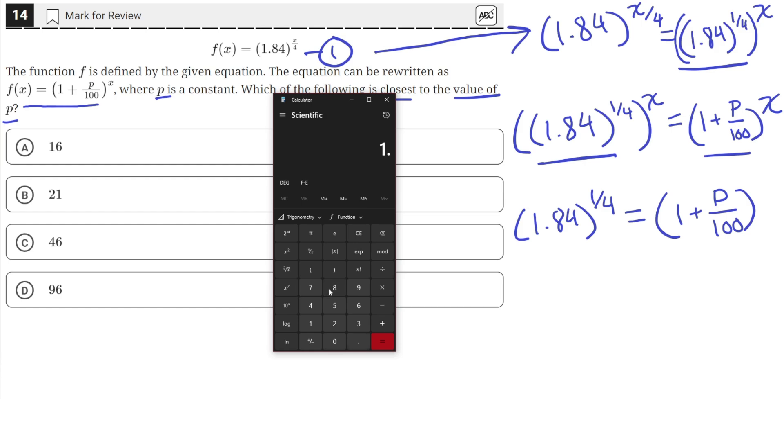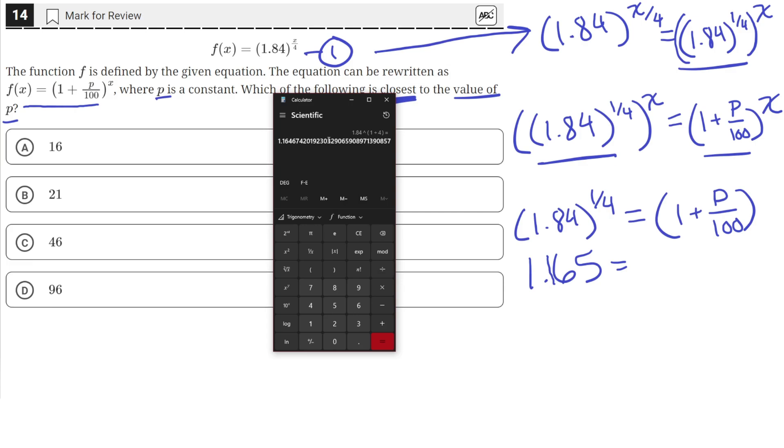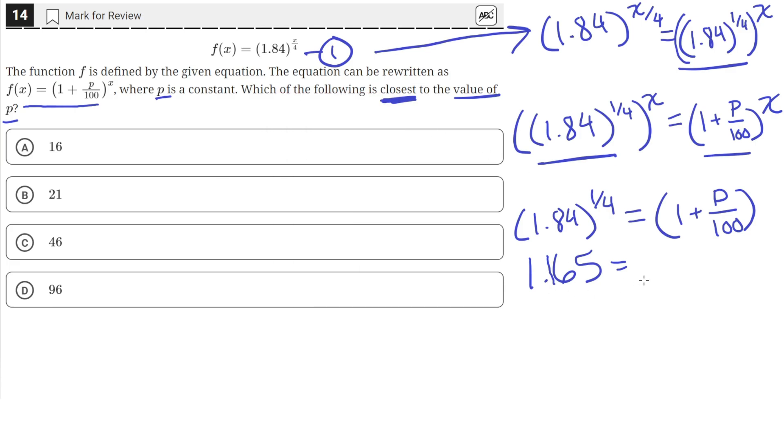We take 1.84 and raise it to the 1 fourth power, which equals 1.165. That's probably why they told us to find the closest value, since this is an unterminating decimal. We'll just use the first three decimal places.